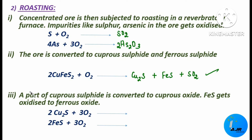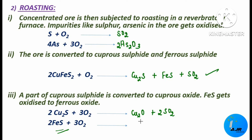In the next part of roasting, a portion of the cuprous sulfide is converted to cuprous oxide (Cu2O) with the release of sulfur dioxide, and ferrous sulfide gets oxidized to ferrous oxide (FeO) plus sulfur dioxide. A coefficient of 2 is needed to balance both equations. These are the important products obtained during the roasting process.